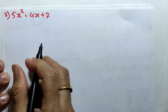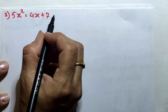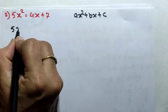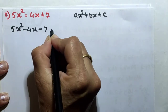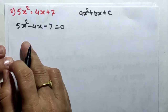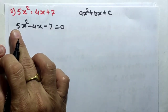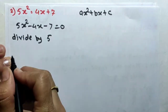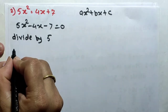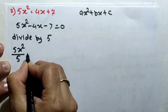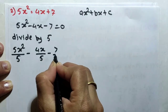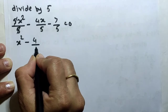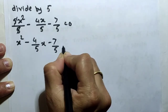Next question: 5x² = 4x + 7. First, we convert it to general form: 5x² − 4x − 7 = 0. Step 1 is to make the coefficient of x² equal to unity, so we divide by 5. That gives: 5x²/5 − 4x/5 − 7/5 = 0, and after cancellation: x² − 4/5·x − 7/5 = 0.